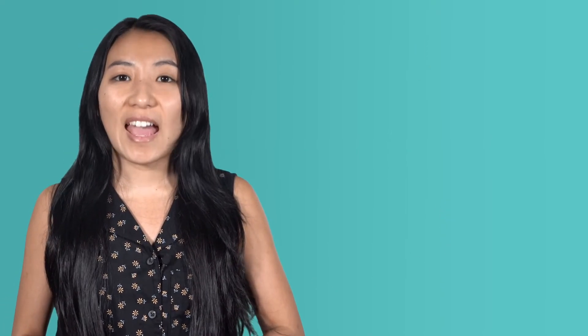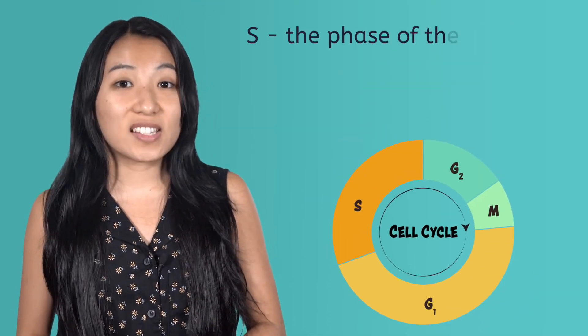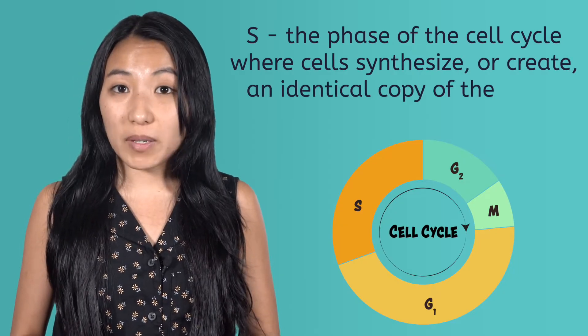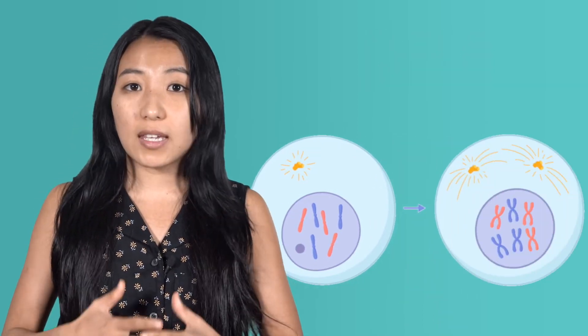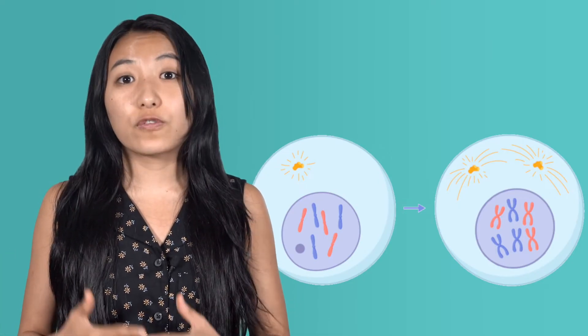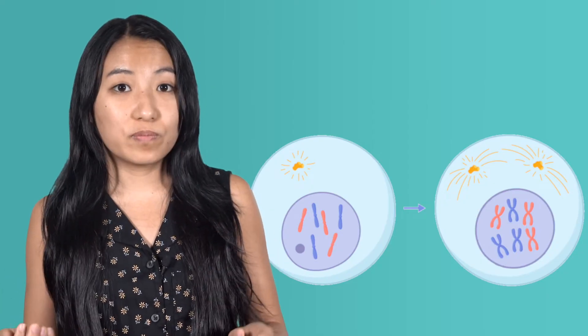Next, the cell enters the S phase. In this phase, cells synthesize or create an identical copy of their DNA. Remember, DNA is the genetic blueprint of our cells, so S phase is essentially making a copy of this blueprint so both future cells will have instructions that tell them what to do.